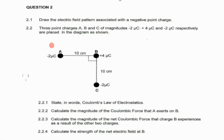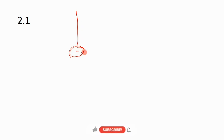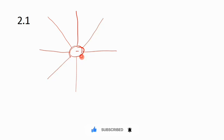Welcome back to the channel. Today's lesson we're looking at electrostatics. Question 2.1 says: draw the electric field pattern associated with a negative point charge. Note it says associated with a negative point charge - that means we are drawing only one point charge. A lot of you made the mistake of drawing the field pattern between two negative point charges. For a single negative point charge, you only need a few field lines, and you indicate that the charges flow inward.